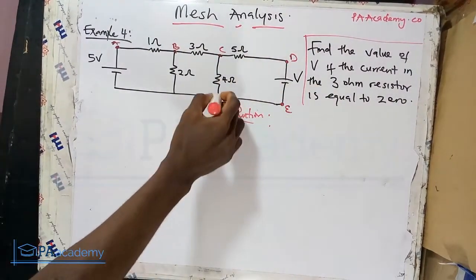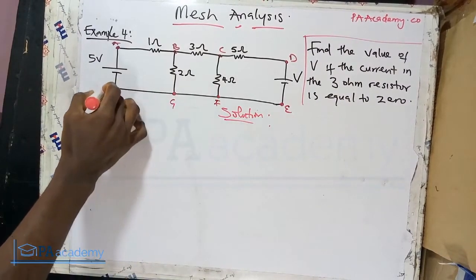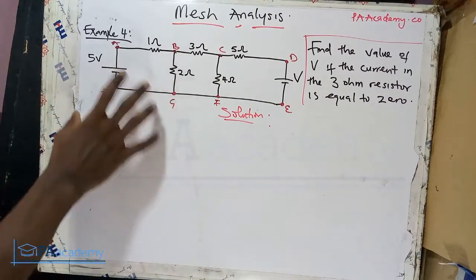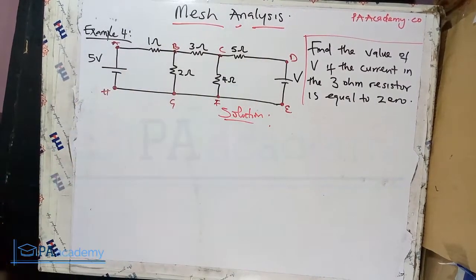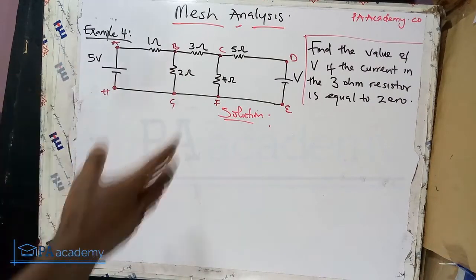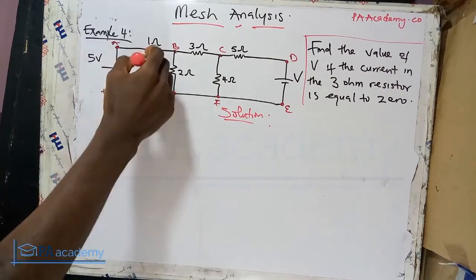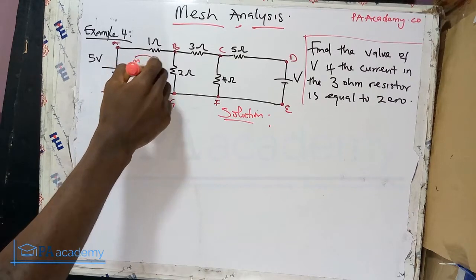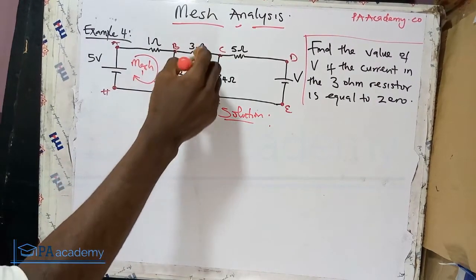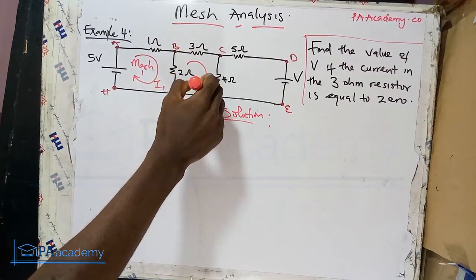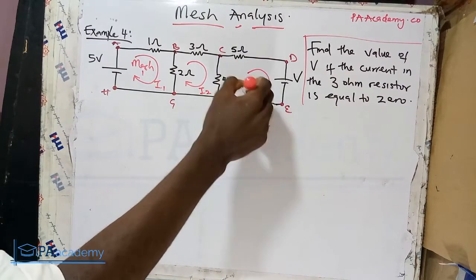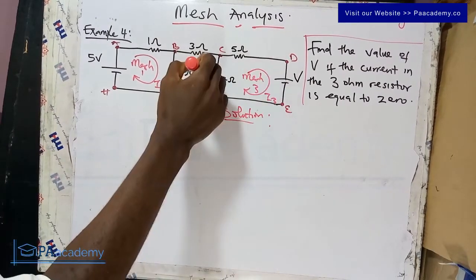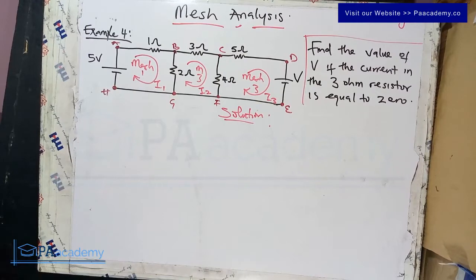Let's call the remaining nodes d, e, f, g, and h. From this circuit we have three meshes: mesh one, mesh two, and mesh three. Let's pick the direction of our currents. I like to start with a clockwise direction, so current for mesh one is i1, mesh two is i2, and mesh three is i3.